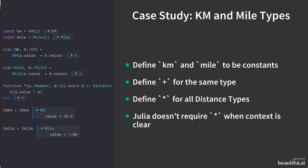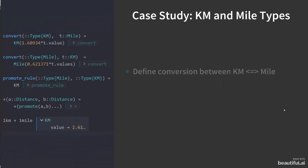I can define addition between two kilometers, and I can define addition between two mile units. I can define how multiplication works with each of those km and mile units. In this case, I can write 10 kilometers and 20 kilometers and add them together. Julia will correctly give me 30 kilometers, and I can do so for the mile as well.